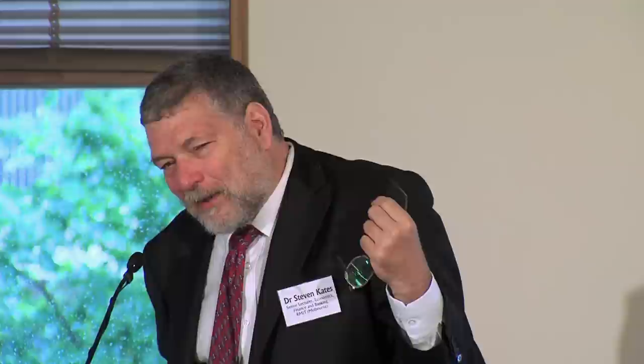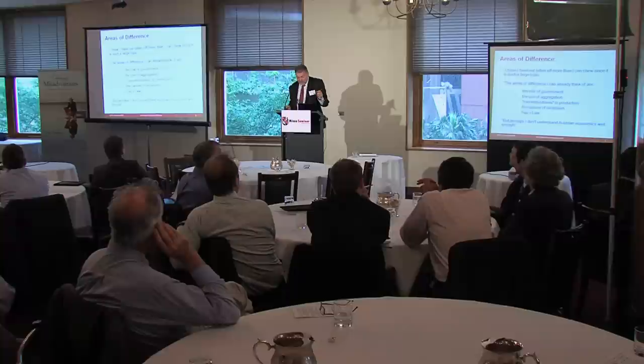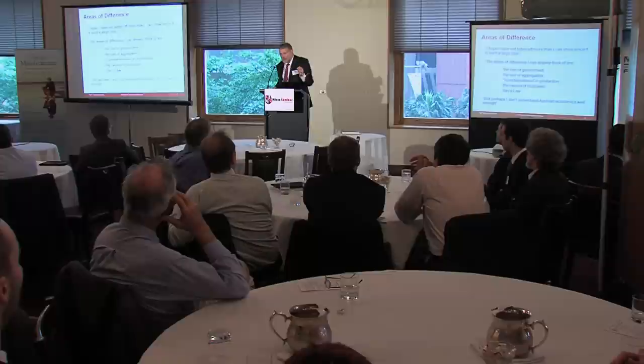I proposed a paper on the differences and similarities between the English classical tradition and Austrian economics. I am from the first group, and while there is an almost total overlap, they are not the same. I thought I should examine how much it is actually true that I'm a classical economist. The differences I identified off the top of my head were: the role of government, the use of aggregation, roundaboutness in production — very important in Austrian tradition but less so in English — and Say's Law.